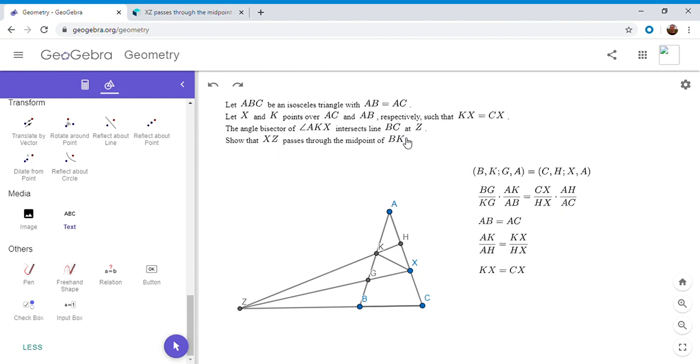We want to show that XZ passes through the midpoint of BK. Since XZ intersects BK at G, we want to show that BG equals GK. That would prove the problem. If you combine all four of these equations, that's actually exactly what you get.